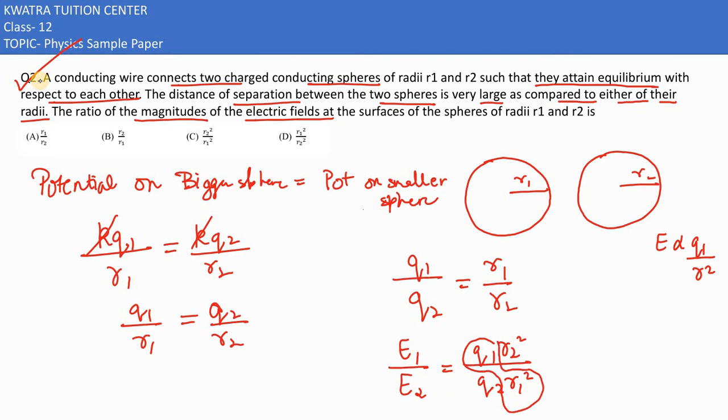We have Q1 over Q2 and R2 squared over R1 squared. The value of Q1 over Q2 is already R1 over R2, and we have R2 squared over R1 squared. One R1 and one R2 cancel, so we get R2 over R1. Out of these options, option B would be correct.